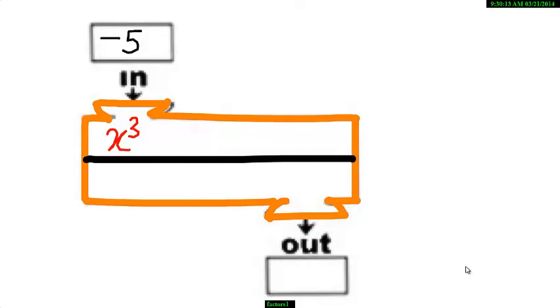Look at this machine. The algebraic expression or the rule is x cube. That is, any number that gets into this machine gets cubed when it comes out.